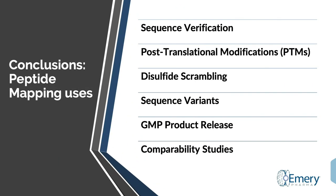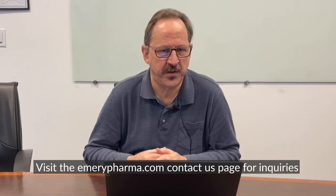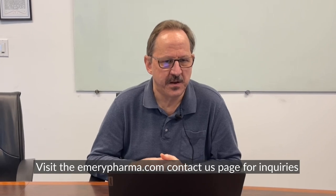In conclusion, LC-MS peptide mapping provides information on sequence verification, post-translational modifications, and sequence variants. The method is useful for early stage identification, comparability and characterization studies, and GMP release. Thank you and I hope this was useful information for you. If you have any further questions, please contact us at emorypharma.com.